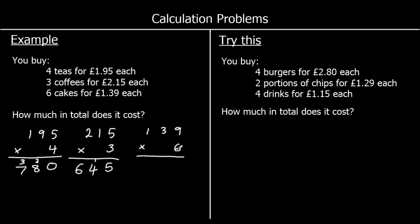And the last one: six nines are 54, so four in the ones carry five over. Six threes are 18, plus the five is 23, so three in the tens carry two over. And six ones are six, plus the two, that's eight. So we've got how much the teas are, the coffees are, and the cakes are. Now we need to add them together.